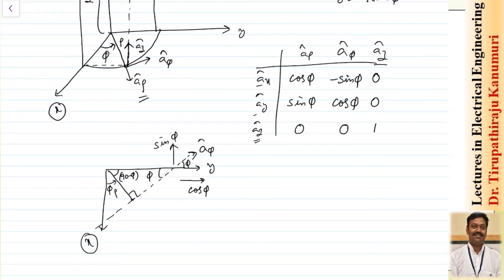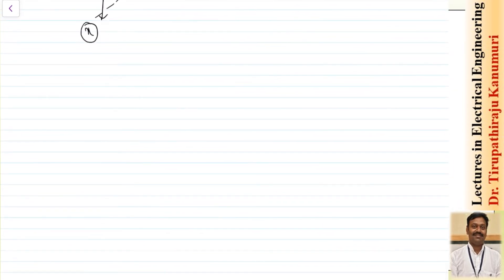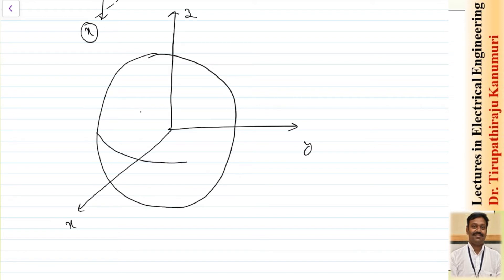This is how you convert between the rectangular and cylindrical coordinate systems and vice versa. Using this table, we can do the conversions. Now let us see the spherical coordinate system. Assume we have a sphere with coordinates x, y, and z.